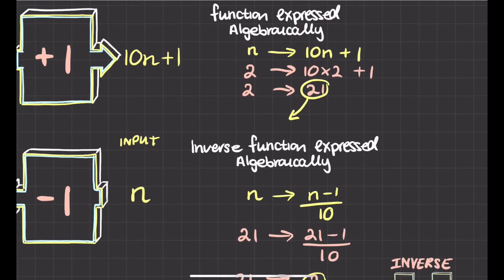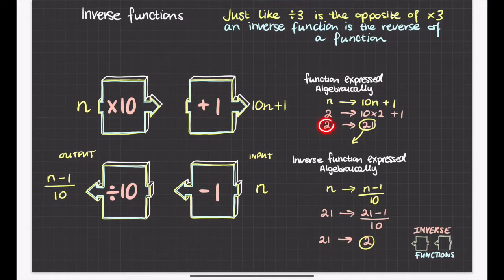And notice that's got me back to where I started, hasn't it? So I put in a number originally into my function machine, it gave me an answer of 21. And so I took that answer 21 and put it into the inverse function machine, and it should re-jumble it back to where it started.